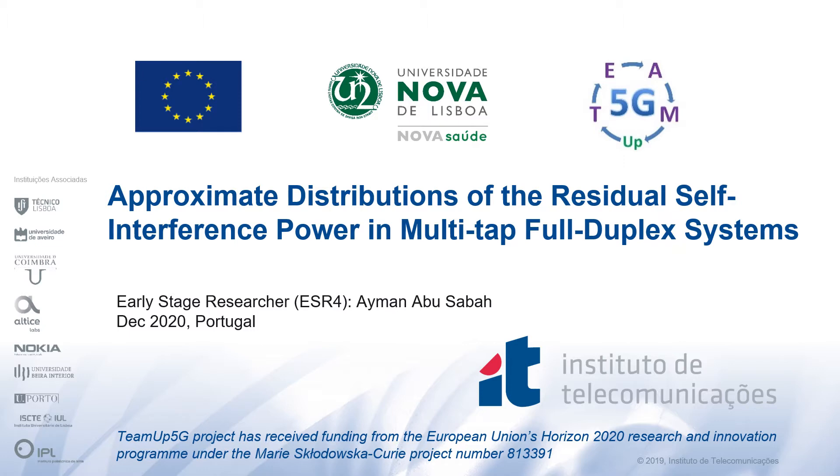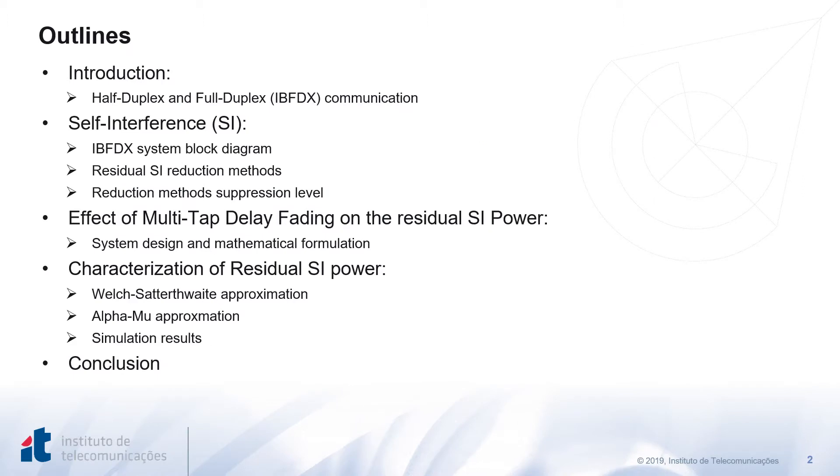Today I am going to talk about the residual self-interference characterization in full-duplex communication systems. The outlines of my presentation are as follows. First, I will make a brief introduction about full-duplex communication systems. Then I will identify and explain what self-interference means. I will go through a block diagram to show an IBFD full-duplex communication system and discuss the most popular residual self-interference reduction methods. Next, I am going to demonstrate the importance of characterizing the residual self-interference power in IBFD full-duplex communication systems. After that, I will show the mathematical steps we performed for successfully characterizing the residual self-interference power. In particular, two approaches are adopted: the Welch-Satterthwaite approximation and the alpha-mu approximation. Both approximations are evaluated and compared through simulation. Finally, we conclude.